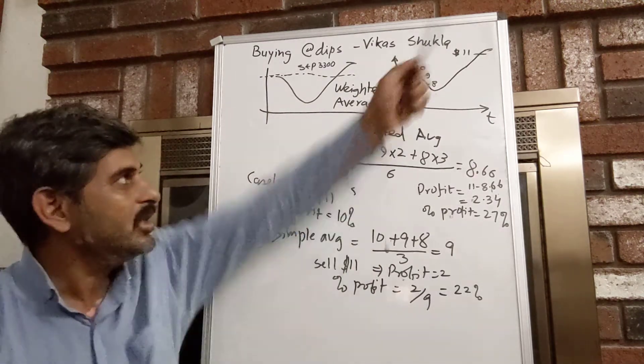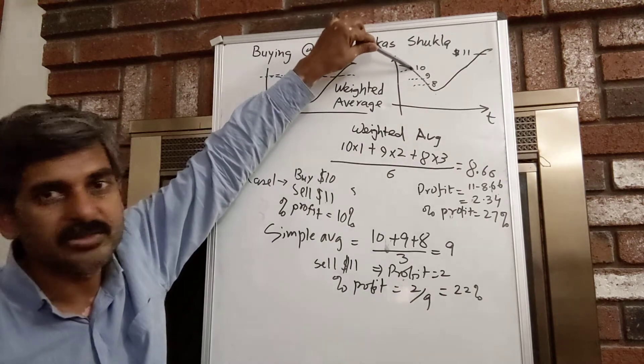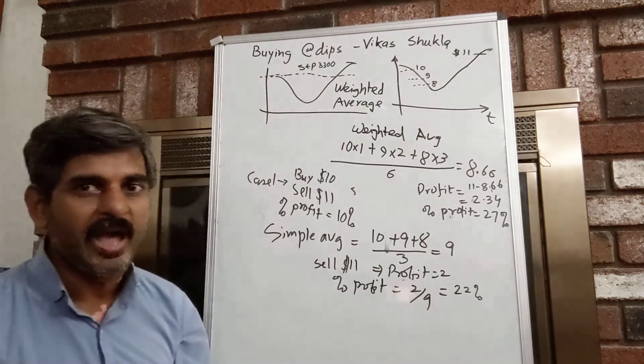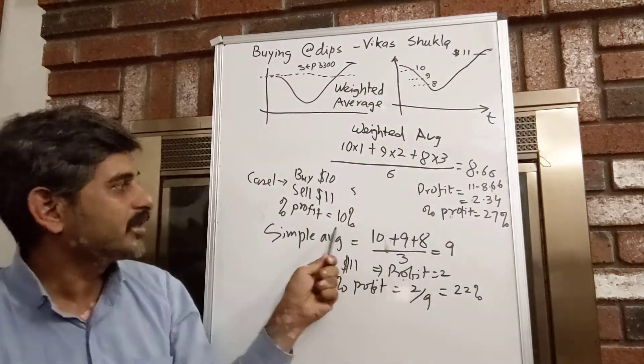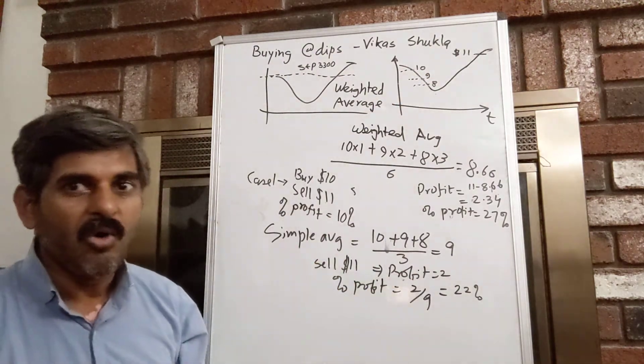What we are doing here is, we are buying the stock with all the money that we have and then we sell all of them at $11, we get 10% of profit.